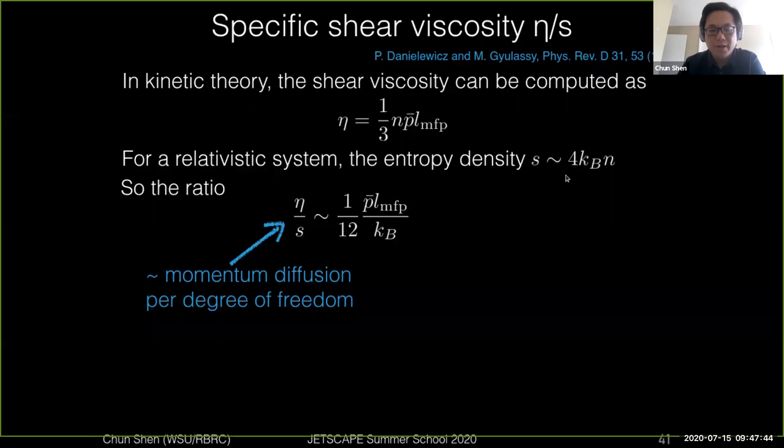From here, you can actually divide both sides by the entropy densities in these calculations. Now on the left-hand side, you form this ratio between shear viscosity over entropy density. And on the right-hand side, you get these combinations which is one over twelve times the mean momentum of the particles times its mean free path over the Stefan-Boltzmann constant.